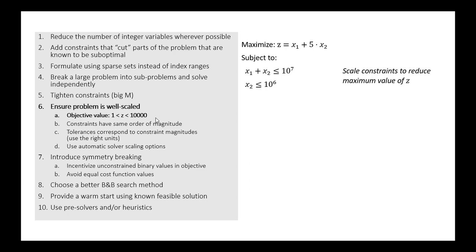Here in this example, just to show what we mean by scaling, we have our objective function with maximization in two variables, x1 and x2. We're introducing two constraints: x1 plus x2 is less than or equal to 10 to the 7th, and x2 is less than or equal to 10 to the 6th. The objective function value for these is going to result in a very large order of magnitude, so we probably want to scale these constraints to reduce the maximum value of Z.